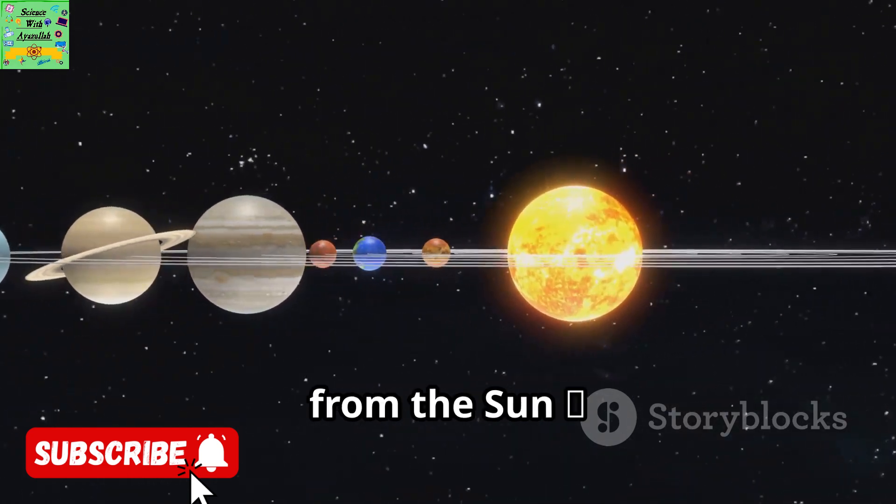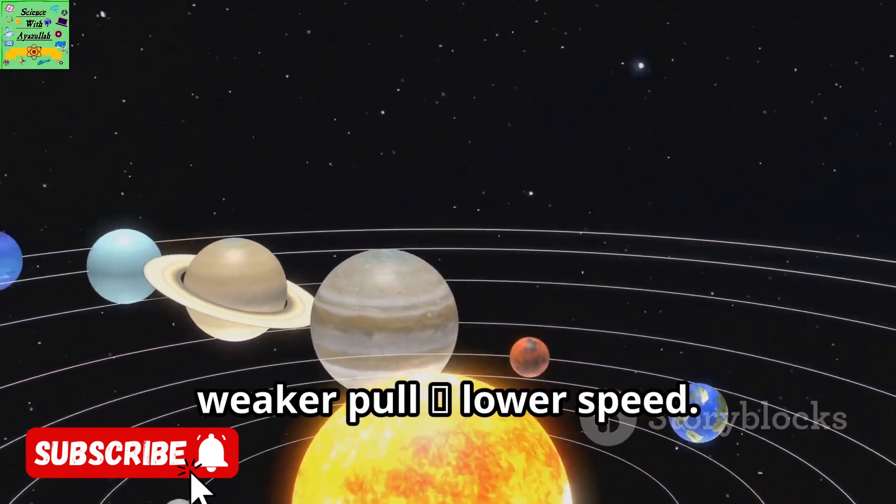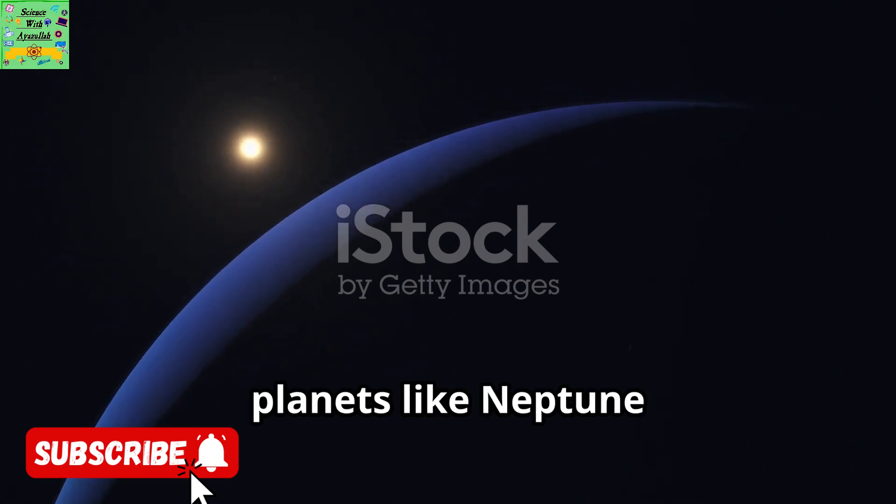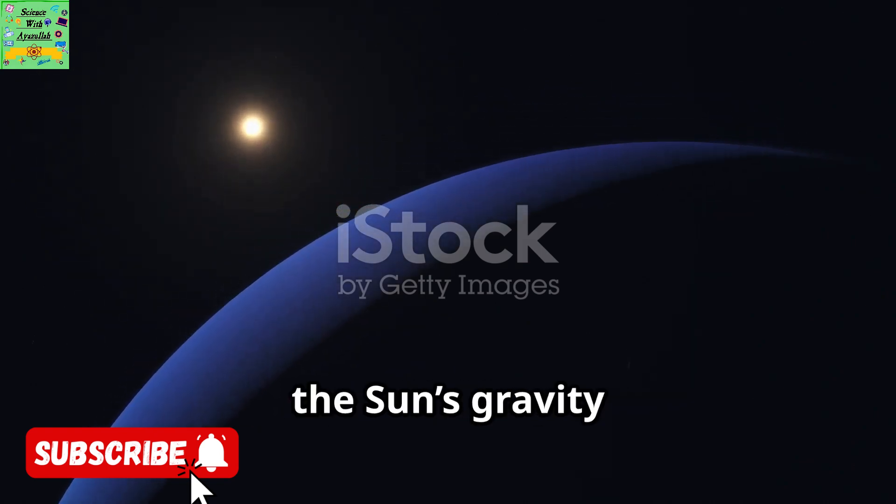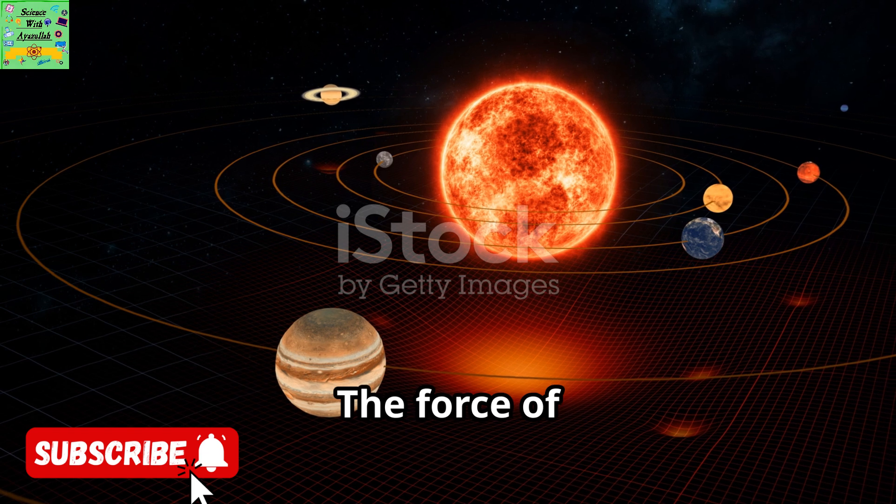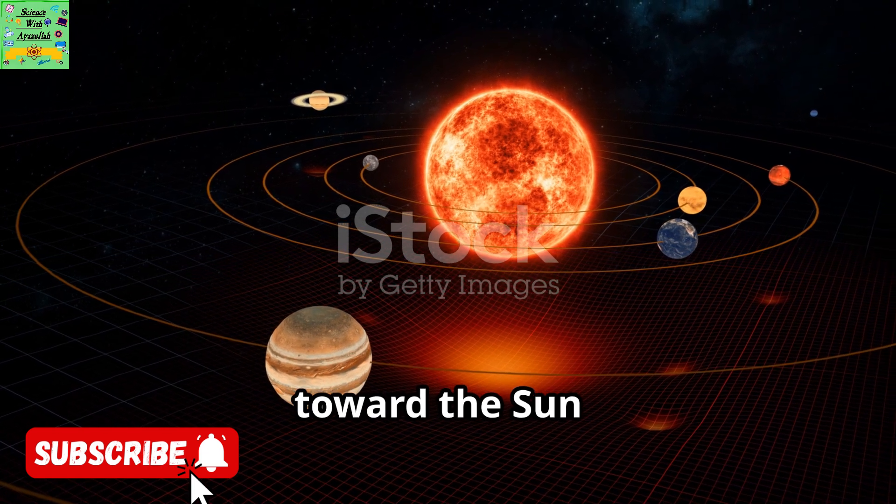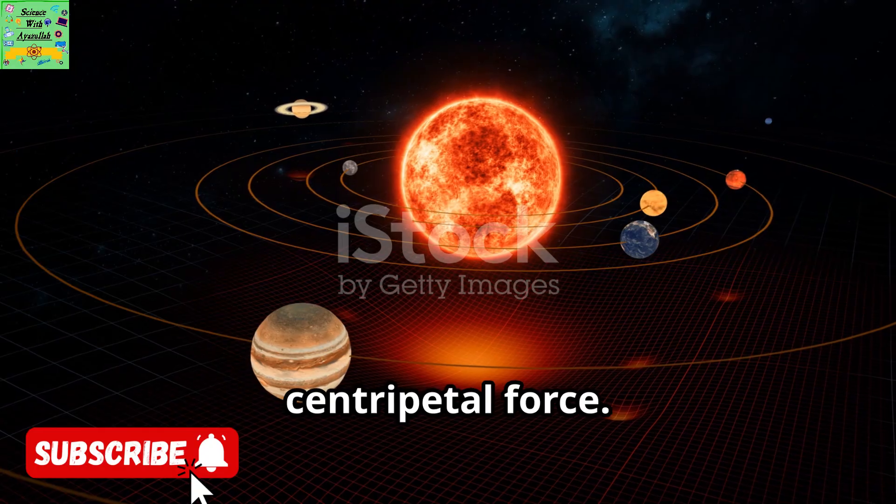Fact 2: Farther from the Sun, weaker pull, lower speed. Fact 3: Even far planets like Neptune stay bound because the Sun's gravity reaches far out. The force of gravity always acts toward the Sun. That inward force is what we call centripetal force.